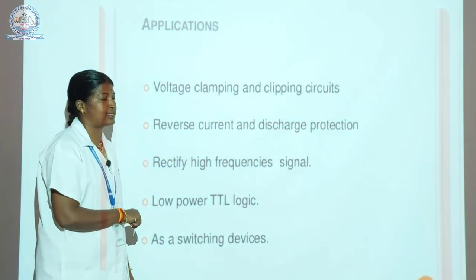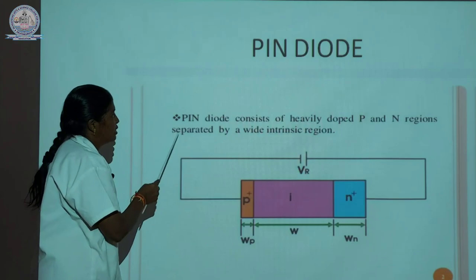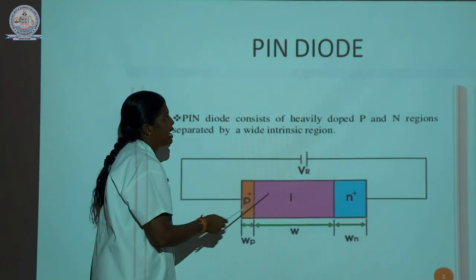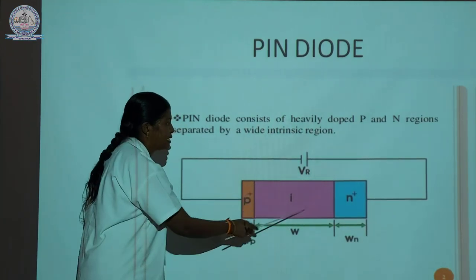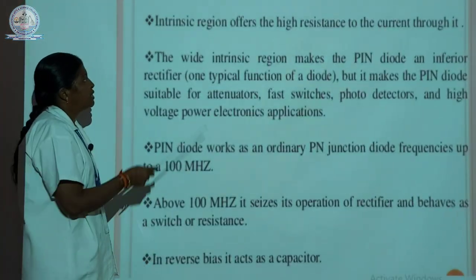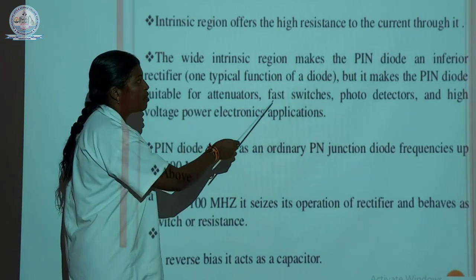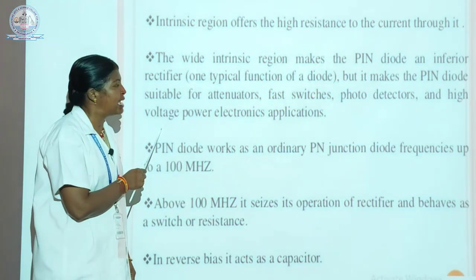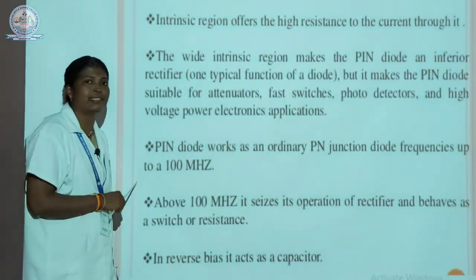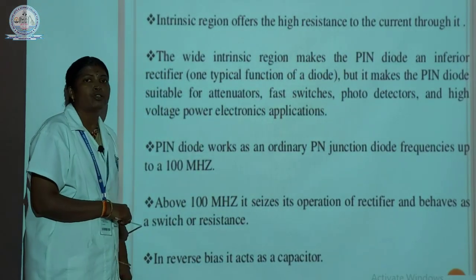Next, the PIN diode — PIN stands for Positive Intrinsic Negative diode. It consists of a heavily doped P and N region separated by a wide intrinsic region. The intrinsic region offers high resistance to current. The wide intrinsic region makes the PIN diode suited for attenuators, fast switches, photo detectors, and high voltage power electronic applications. The PIN diode works as an ordinary PN junction diode for frequencies up to 100 MHz. Above 100 MHz, it ceases to act as a rectifier and begins to function as a switch or resistance. In reverse bias, it acts as a capacitor.